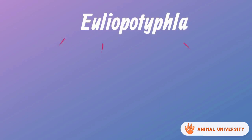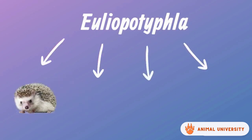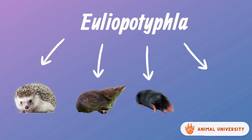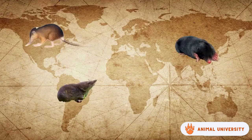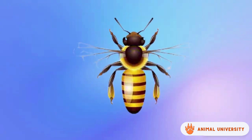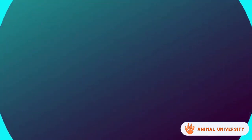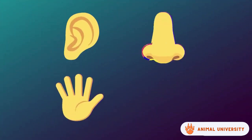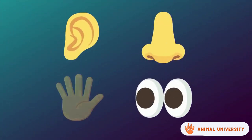Eulipotyphla are divided into four groups: Erinaceidae which includes hedgehogs and moonrats, true shrews, moles, and lastly solenodons. They are a very diverse order with about 450 species. They are insectivorous. This is the main group that eats insects.